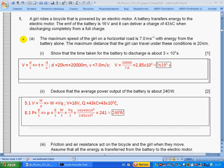The maximum distance that the girl can travel under these conditions is 20 kilometers. Show that the time taken for the battery to discharge is about 3 times 10 to the third seconds. We use the simple formula: speed equals distance by time. We rearrange this formula for time, change kilometers into meters, and then we'll find the time.